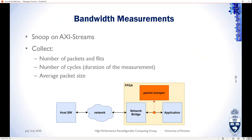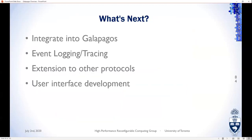Pharos also has a bandwidth monitor that collects traffic information by snooping on active streamlines. The packet snooper collects the number of flits and packets passing through, as well as measurement duration, giving us the means to calculate throughput. Average packet size is also measured. Future work includes integration of Pharos into Galapagos, adding event logging and tracing, extending to other protocols, and developing a user interface.